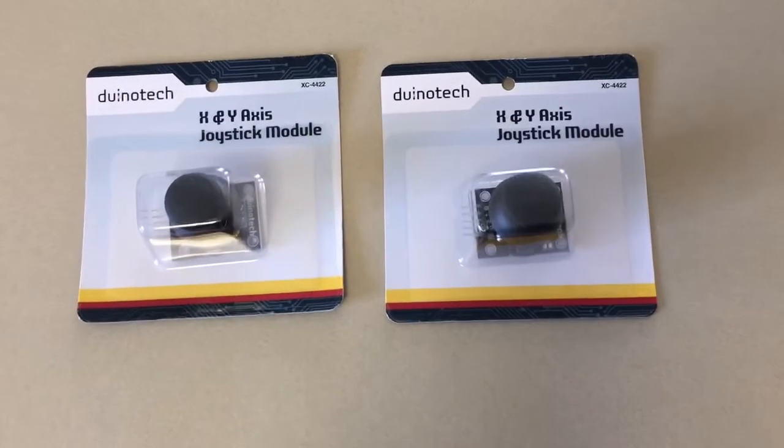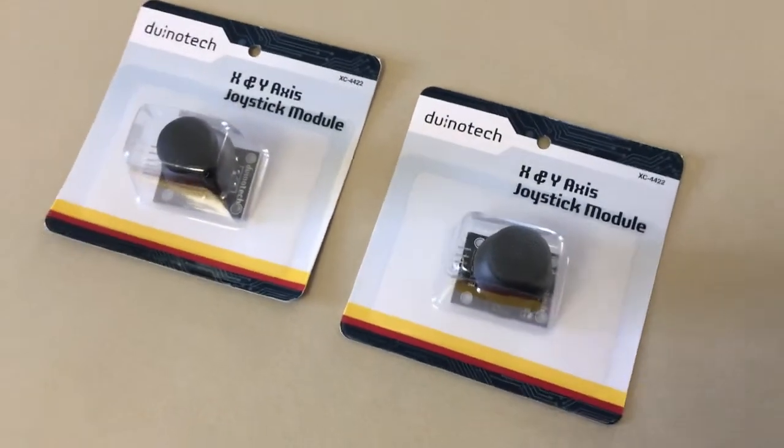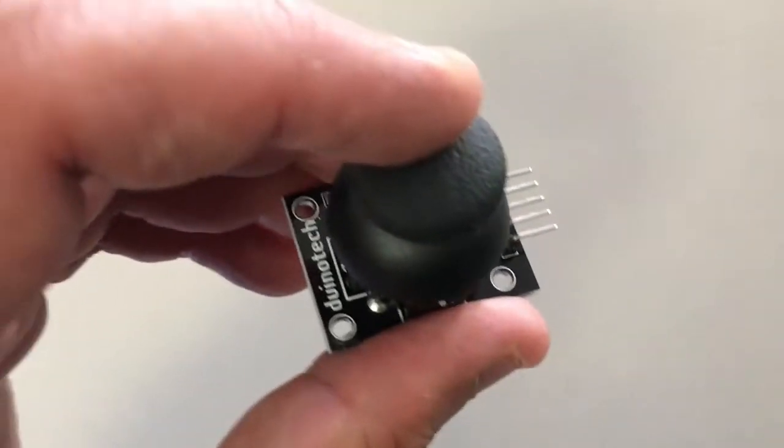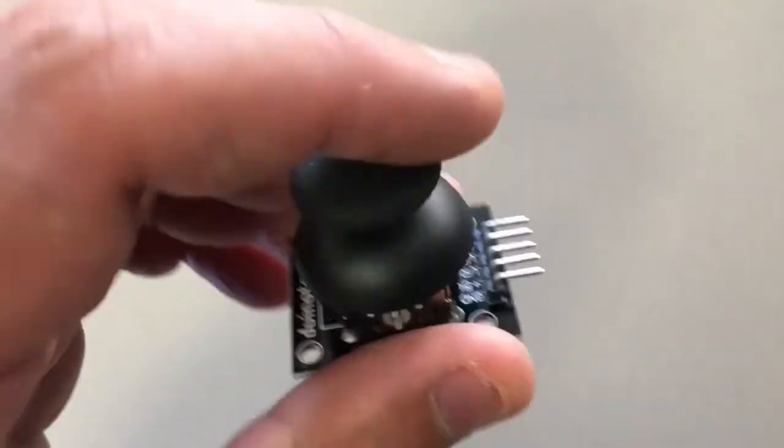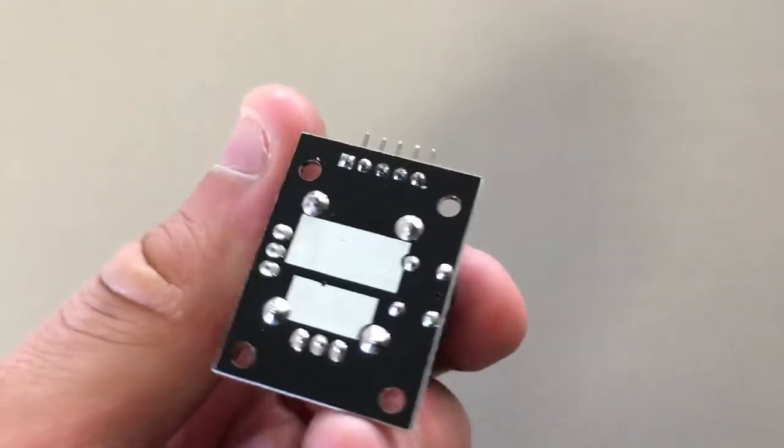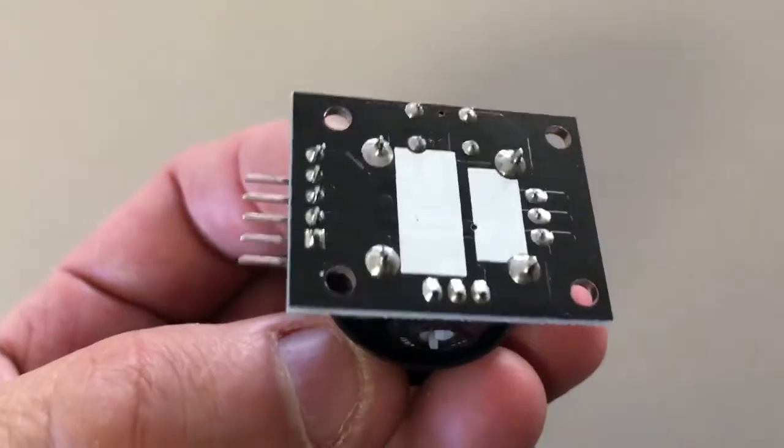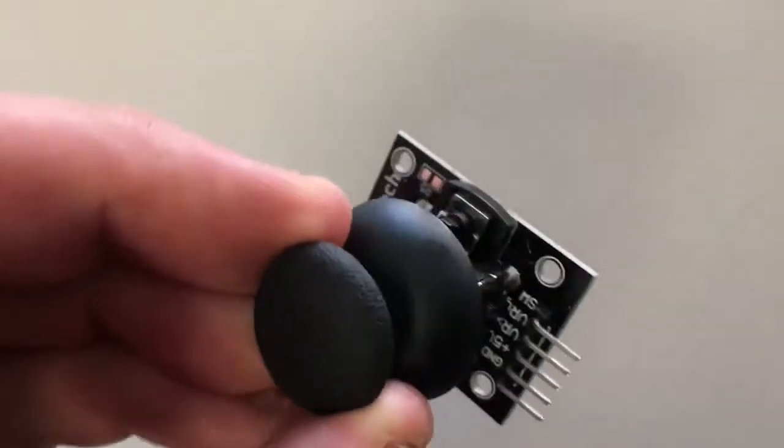And of course the joysticks, these are available just as a bare component, but I get mine just for convenience also at Jaycar Australia, and they're mounted on an Arduino shield. This PCB assumes it's going to be used as an analog joystick, and makes connections on the circuit board that we don't want, so the part has to come off.